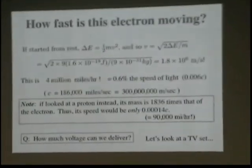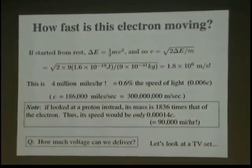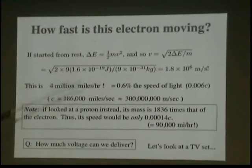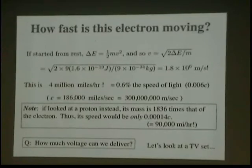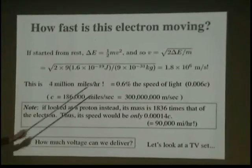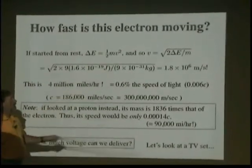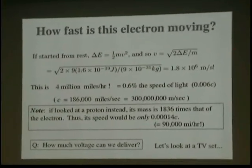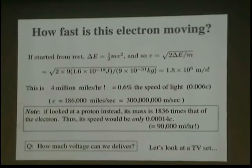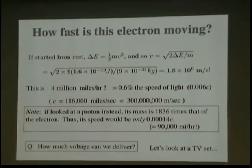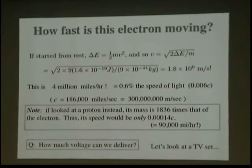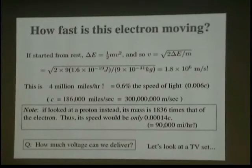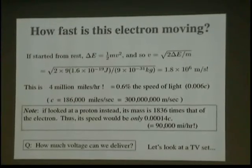How fast is that electron moving? Let's figure it out. Now, if it started from rest, if it started from sitting in my hand, the change in energy is equal to one-half mass times velocity squared. And so, our velocity, we can reduce that, or convert it, is two times the change in energy divided by the mass, take the square root of that. Plug in all the numbers, 1.8 million meters per second. Pretty zippy thing. It's 4 million miles an hour. But it's only 6 tenths of a percent of the speed of light.